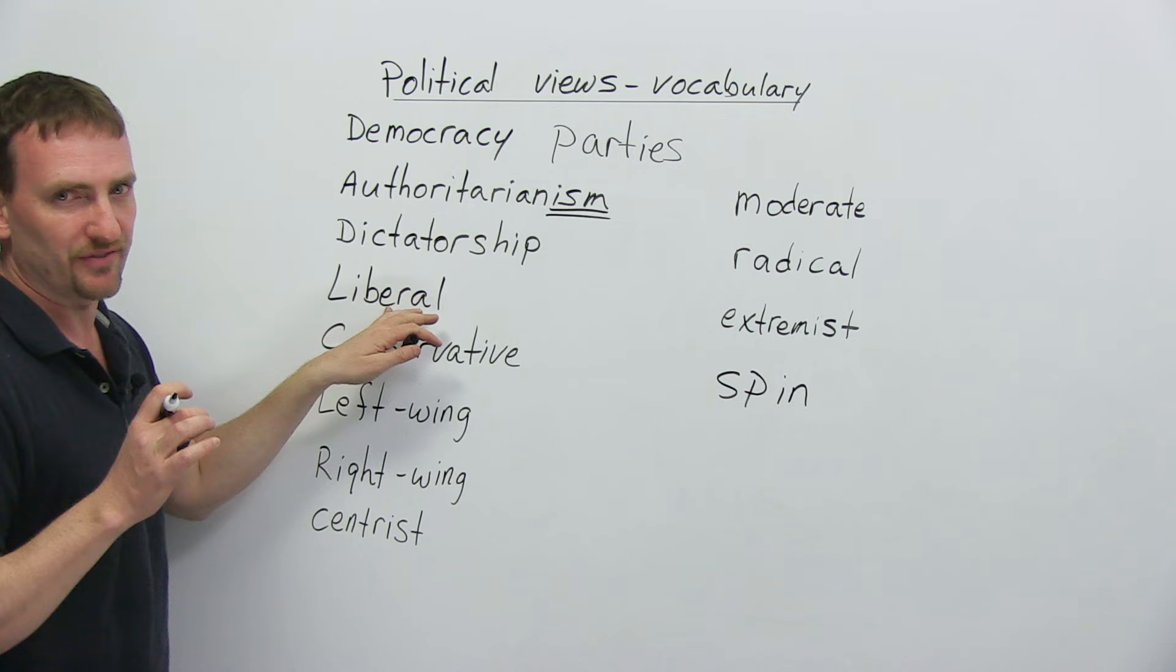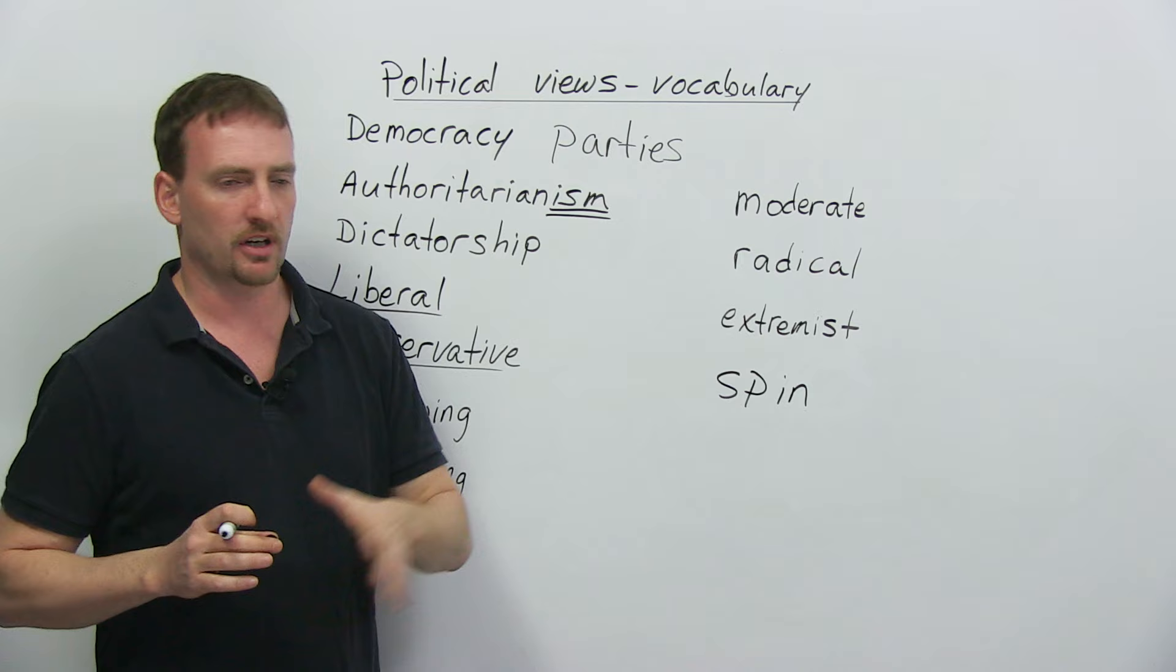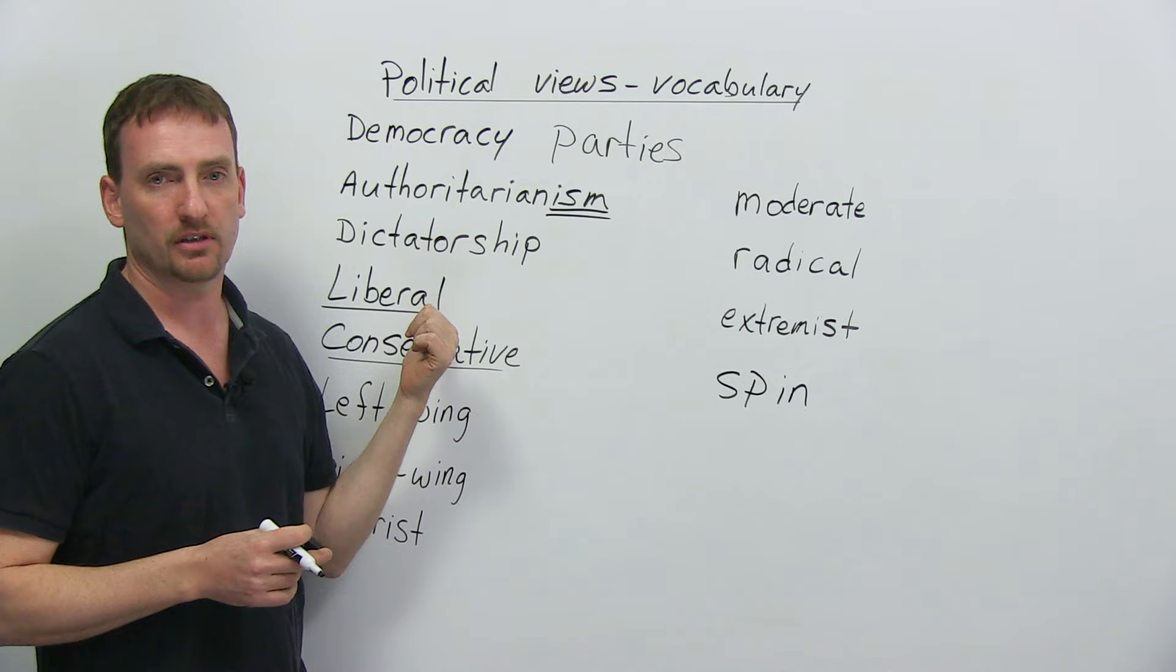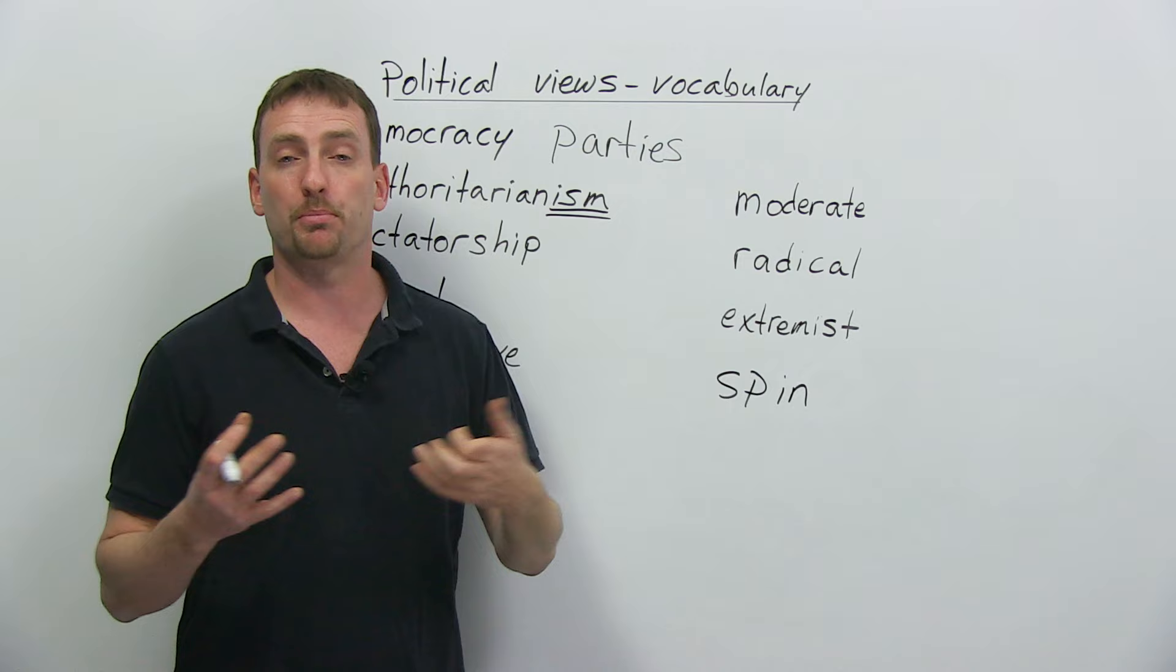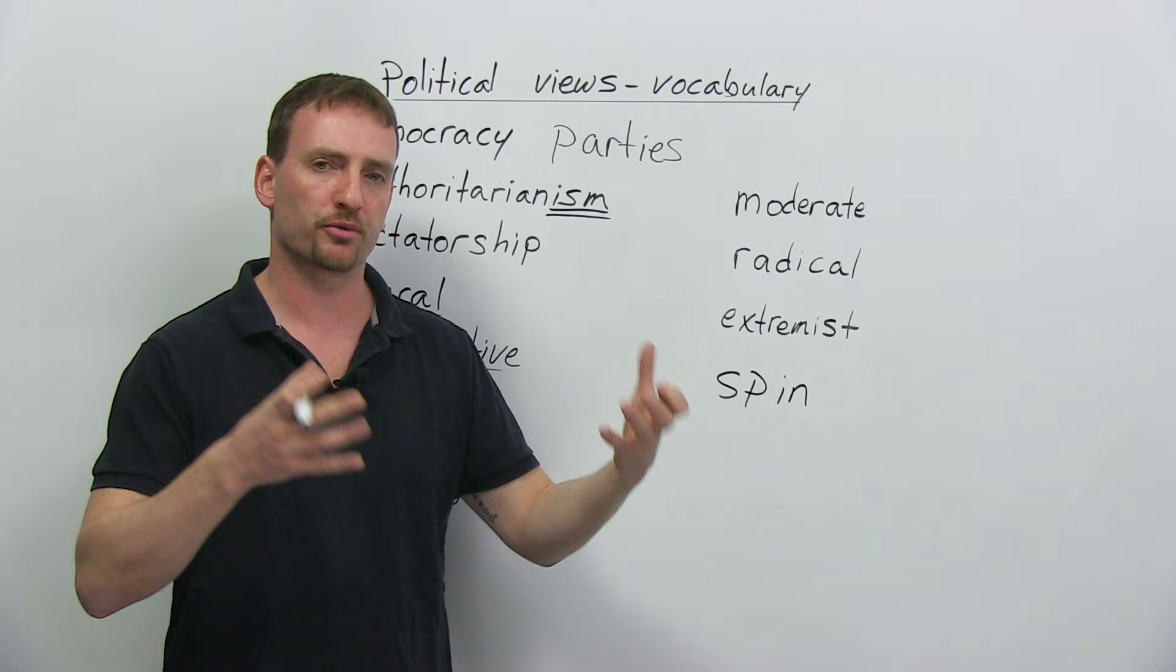So, here we're getting more into the specific views that people have. Most people are liberal or conservative. Now, you're going to hear these words a lot. In America, for example, you hear about the Democrats and the Republicans. Generally, the Democrats are liberal, the Republicans are conservative. Liberal governments or liberal politicians believe in the individual. They want every individual to have an opportunity to succeed. They want basically to help everyone improve their lives somehow.